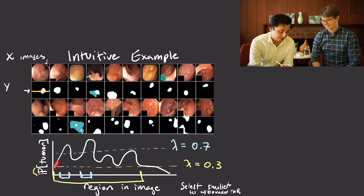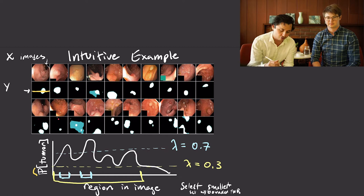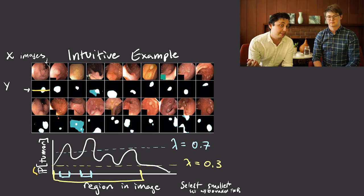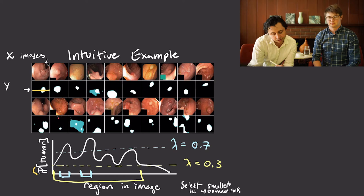Let's think about what happens when we change lambda. When lambda equals 0.7, we look at all pixels where the estimated probability of coming from a tumor is greater than 0.7. In this case that's these two little peaks, and those become our prediction set — a set of pixels in the image. In terms of color coding: white means true positive (tumor pixels we segmented correctly), blue is false positive (things we called tumor but are not), and red is false negative — tumor pixels that we missed.